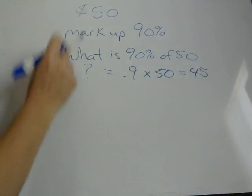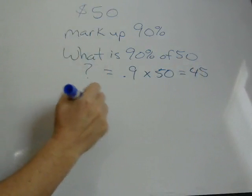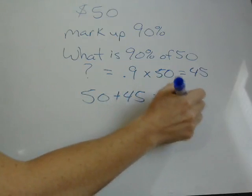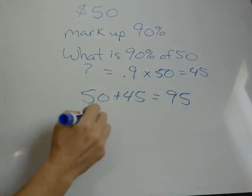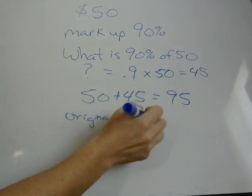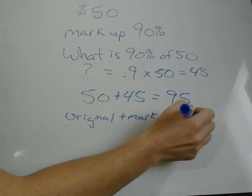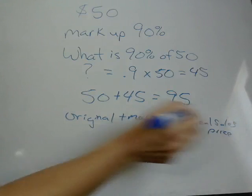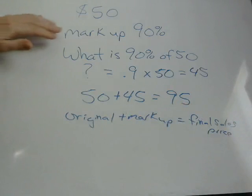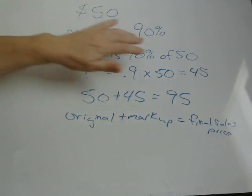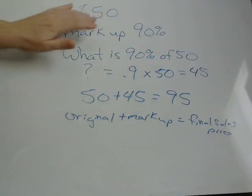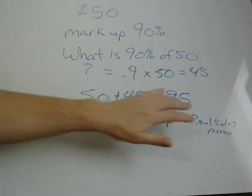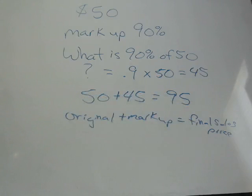To find the final sales price, it's the original cost plus the markup, which equals the final selling price. So if you encounter a problem where they're marking it up by a percentage, you take the original price times the markup to get the markup amount, then add it to the original. The markup was $45, so $50 plus $45 is $95. That's how much it's going to sell for in the end.